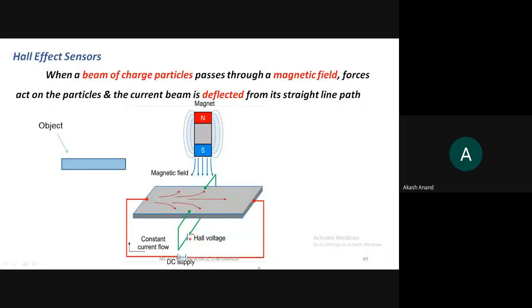When DC current is supplied at the two terminals, the current passes from one end to the other in a straight line. When a magnet is placed or a magnetic field is introduced at this location, a certain force called the Lorentz force acts. When a current-carrying conductor is placed in a magnetic field it experiences certain changes, and due to the Lorentz force the electrons and poles inside the plate get separated.